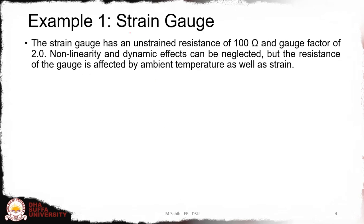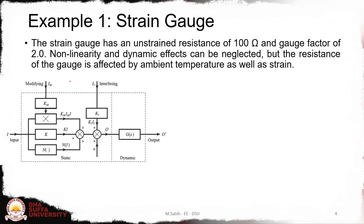Let's take this example of a strain gauge. Assume that we have a strain gauge that has an unstrained resistance of 100 ohms and a gauge factor of 2. We ignore the nonlinearity and dynamic effects—they are neglected—but the resistance of the gauge is affected by the ambient temperature.